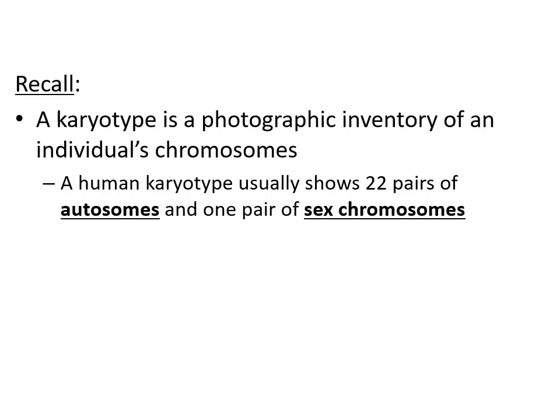Abnormal meiosis. A karyotype is a photographic inventory of an individual's chromosomes — essentially just the layout of the chromosomes within one of a person's cells. A human karyotype usually has 22 pairs of autosomes and then one pair of sex chromosomes, creating a total of 23 pairs.